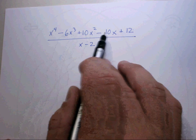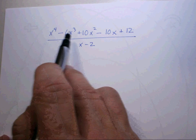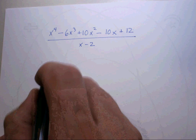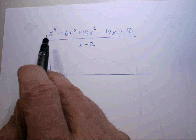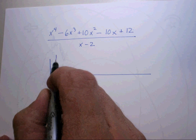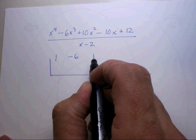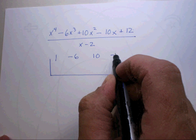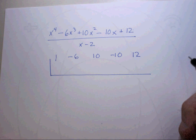What you do is you use the coefficients in each one of the polynomials, and you set it up like this. Make sure everything is in correct descending order, draw a box, and then write the coefficients down for each of the terms. This would be a 1, negative 6, positive 10, negative 10, and a positive 12.